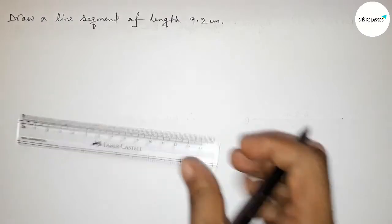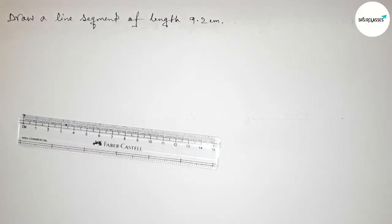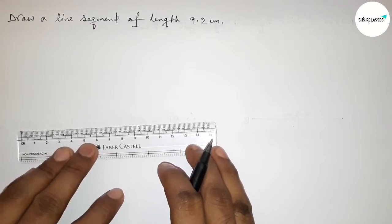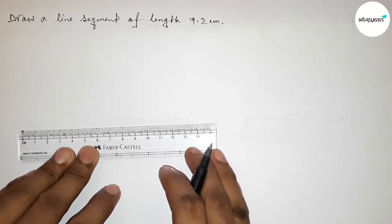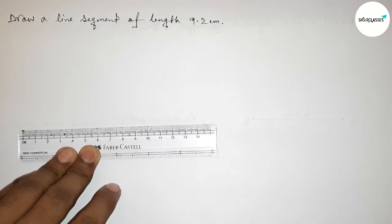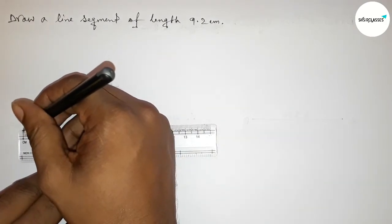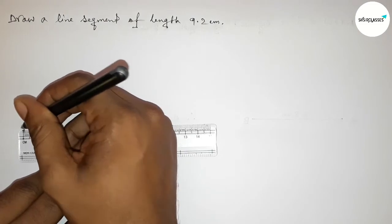start the video. First of all, with the help of a scale, first putting the scale here perfectly, then measure the length 9.2 centimeter. So first counting, this is the starting zero, so first marking here the starting zero.